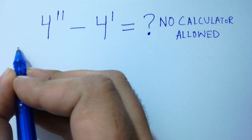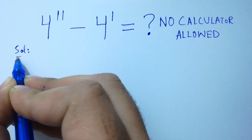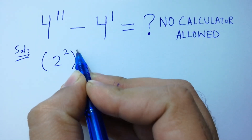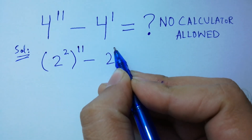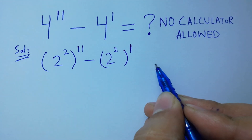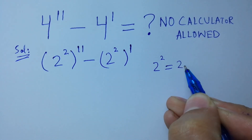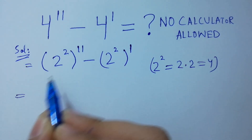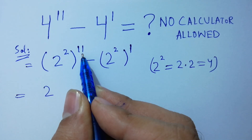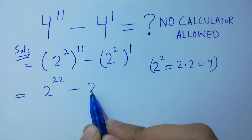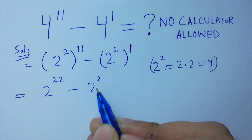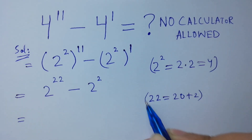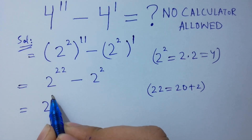Let's find the solution. This is the same as (2 squared) to the power 11 minus (2 squared) to the power 1, since 2 squared equals 4. So we get 2 to the power 22 minus 2 squared. Since 22 equals 20 plus 2, it becomes 2 to the power (20 plus 2) minus 2 to the power 2.